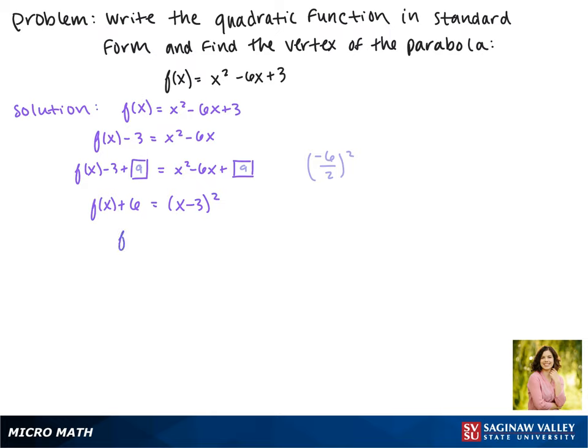Now to get f(x) by itself to put it in standard form, we have to subtract 6 to the other side. And remember, our standard form is f(x) equals a times (x minus h) squared plus k, where (h, k) is the vertex.